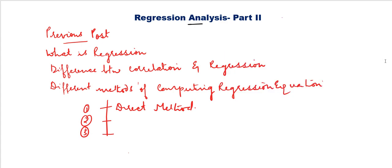Hey students, welcome back to the second part of regression analysis. In the previous part we have seen what is regression, what is the difference between correlation and regression, and I've told you about different methods of computing the regression equations. In that, the first one we have seen is the direct method. Now we are going to see the second method: when the deviations are taken from the arithmetic mean — the arithmetic mean method.